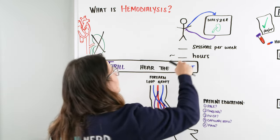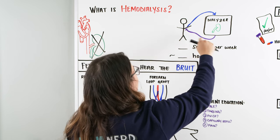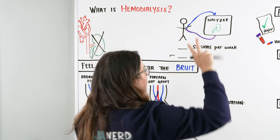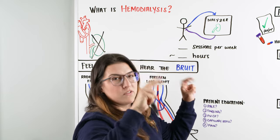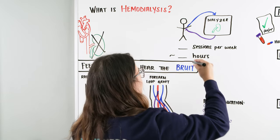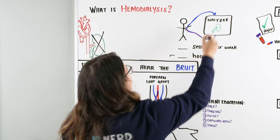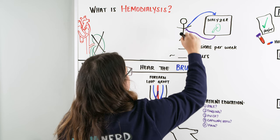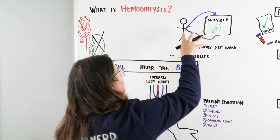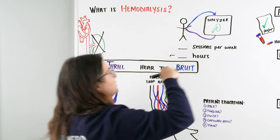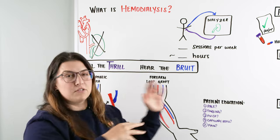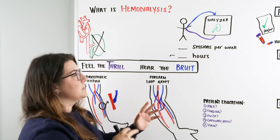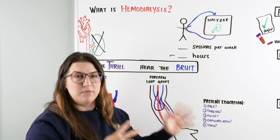So we can hook this patient up to a dialyzer. We take blood from the patient, clean it, remove all those wastes, rebalance everything, and then pump that blood back into the patient. We do this to get the patient's numbers and levels back to where we want them, or at least to allow this patient to be able to function.